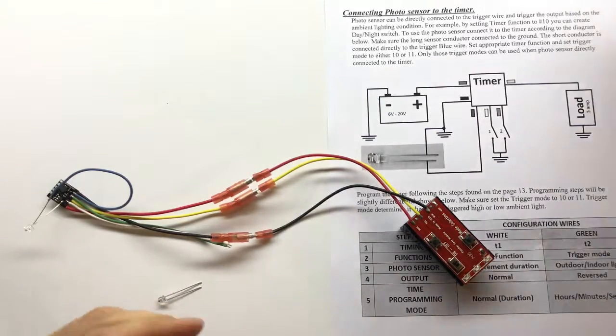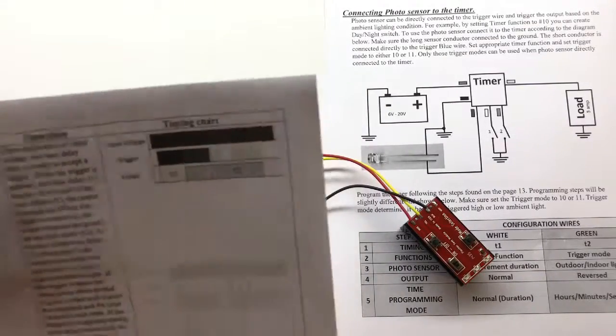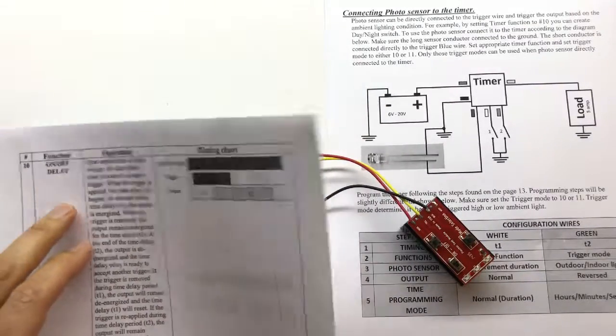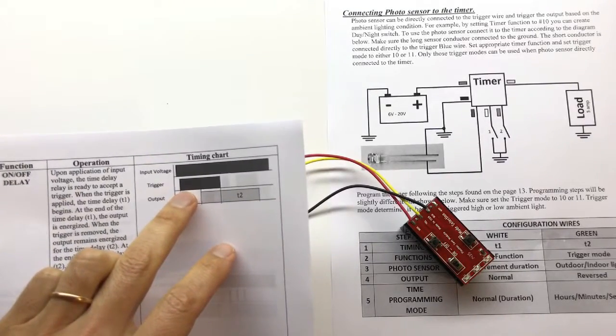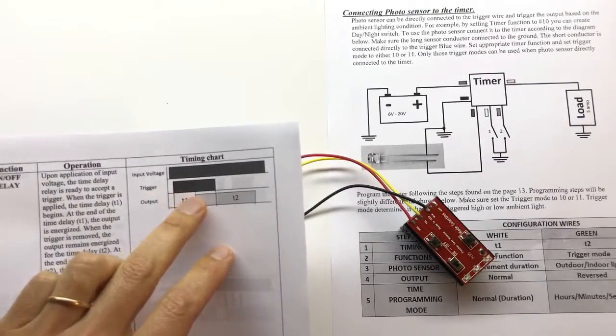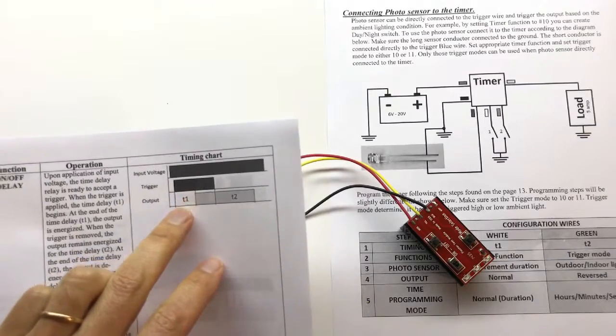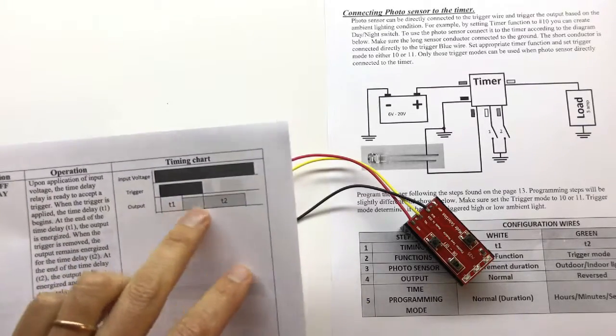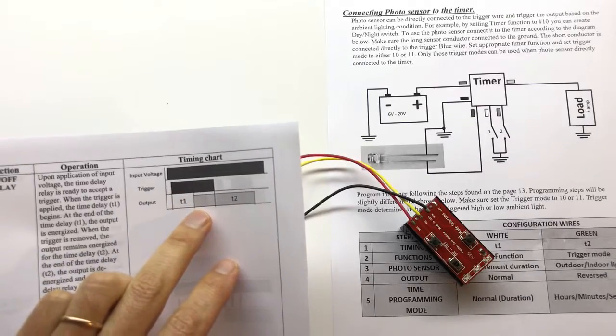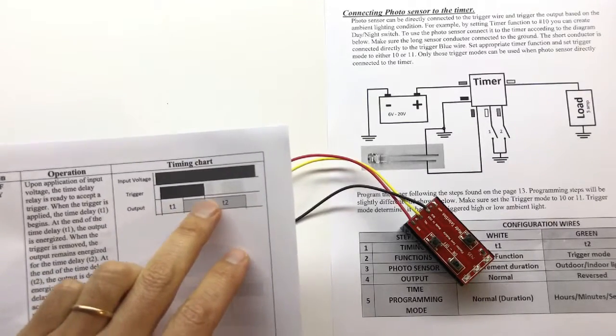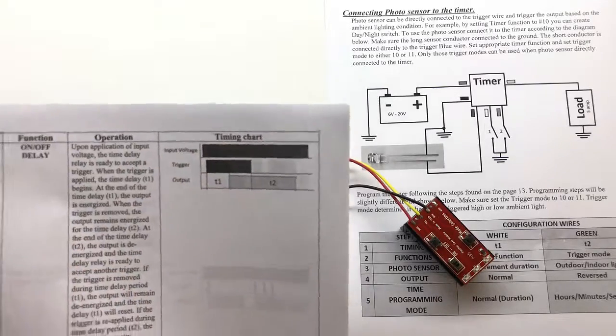So I'm just going to show you a couple of examples. For example, function 10. If we use the function 10 and set the trigger to the sun down, then we will set the T1 and T2 to very short time. So the sun down will trigger the output and it will be on until the sun rise and will turn off.